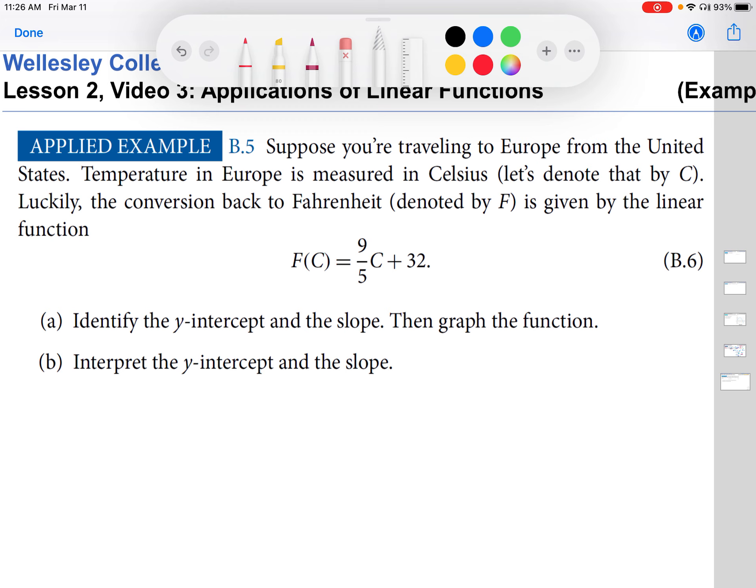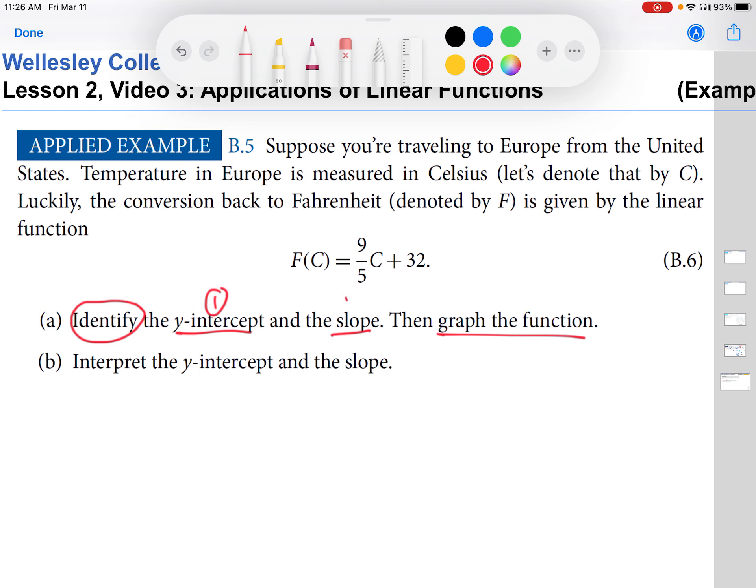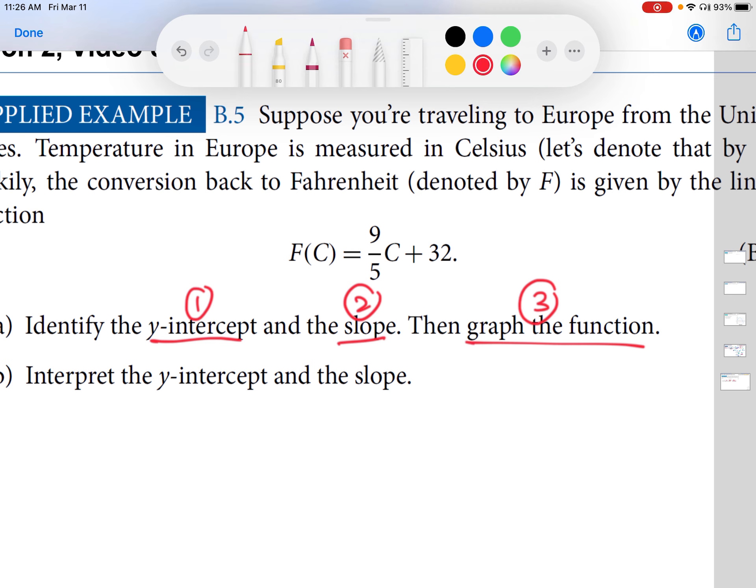Let's take them step by step. So, the first question is about identify. So, we just want to pick out the y-intercept and the slope. And then later, we want to graph the function. So, there's three things to do here. So, I'll just number them. Let's think about the y-intercept. Remember, the y-intercept is the y-value on the graph when x is 0.